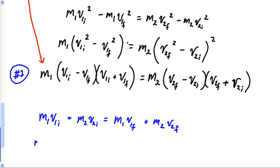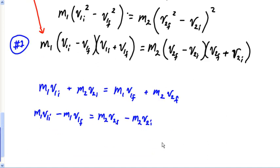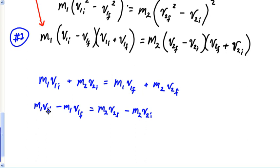So this ends up M1 V1 initial minus M1 V1 final equals, on the other side, M2 V2 final minus M2, and you should start feeling some similarities. Now, I'm going to do the same thing. I'm going to go back, and I'm going to factor the M1s out of this. M1 times V1 initial minus V1 final equals M2 V2 final minus V2 initial.